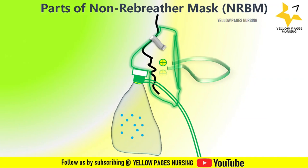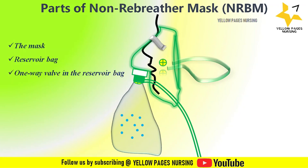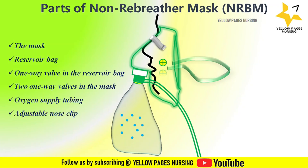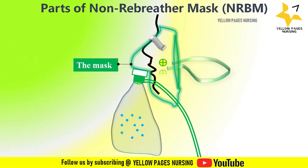The parts of a non-rebreather mask include: the mask, reservoir bag, one-way valve between the mask and reservoir bag, two one-way valves in the mask, oxygen supply tubing, adjustable nose clip, and elastic strap. The mask is generally made of soft, pliable plastic material which fits over the patient's nose and mouth. If you look at the picture, you can see how the mask looks — it resembles a normal oxygen mask.